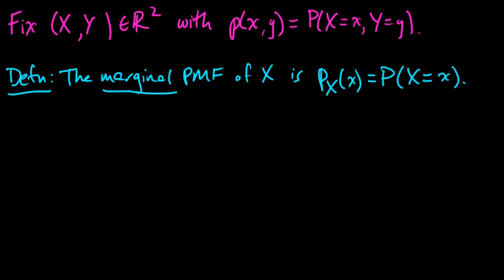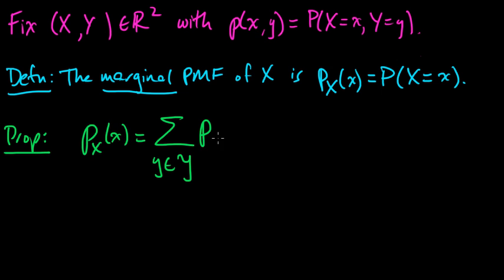And now we have a little proposition. The marginal PMF satisfies the identity: it's equal to the sum over all elements little y that this random variable Y could take of the joint PMF. So we're summing out the y. You're summing over y's and you get rid of y and you're just left with x. And of course the same thing holds for Y—we would sum over the x's to get rid of x.